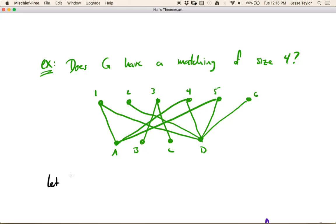And in this case, if we consider the set B and C, the neighborhood of B and C, B is only adjacent to 3. And now we have the size of the neighborhood of X is 1 and the size of X itself is 2. So this violates Hall's condition.